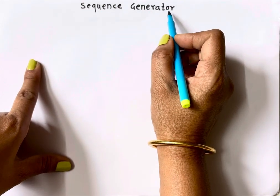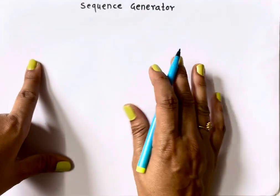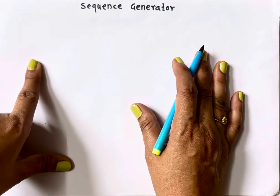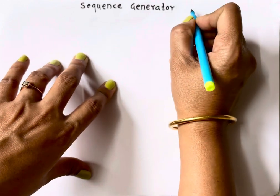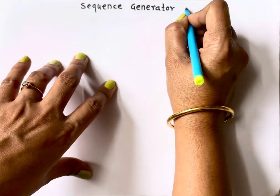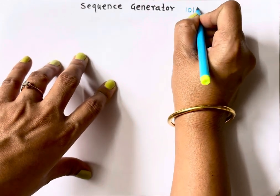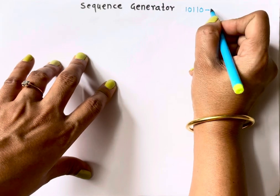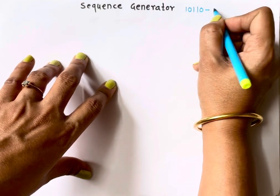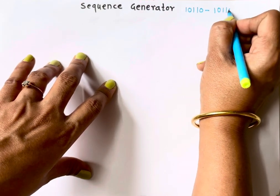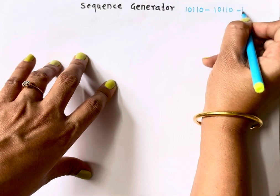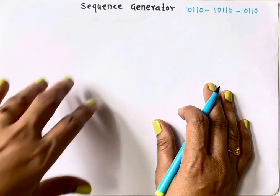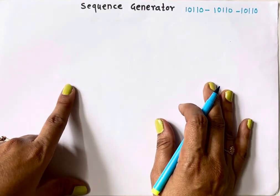Basically, sequence generators are circuits which produce a specific repetitive pattern of bits. For example, let's take the sequence 10110 — they will keep on generating this pattern 10110 again and again. So we can say this is an application of flip-flops.